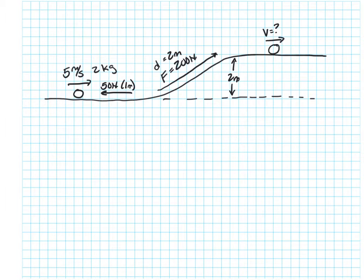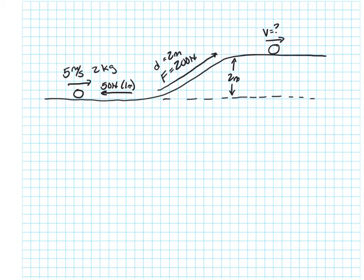Let's look at this example problem to see what I mean. At the bottom, I've got a ball that's traveling at 5 meters per second. The ball has a mass of 2 kilograms, and the ball is going to climb 2 meters, and then at the top it's going to have some unknown speed. But I have two forces acting on this ball. One of the forces is going to act against the ball, so that will remove energy from the starting energy of the ball.